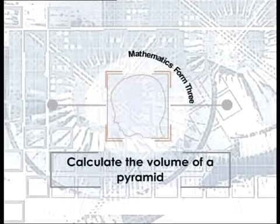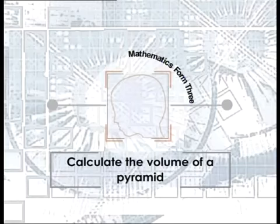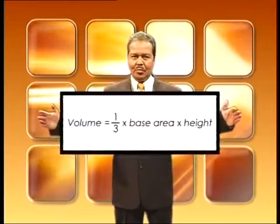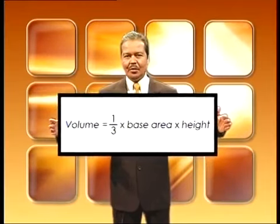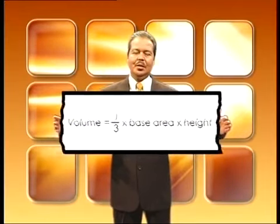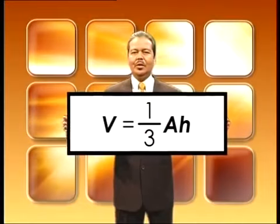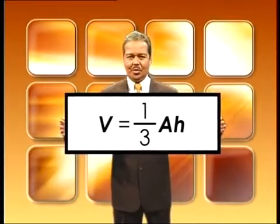To calculate the volume of a pyramid, we can use the formula: Volume equals one-third times base area times height, V = (1/3)AH.